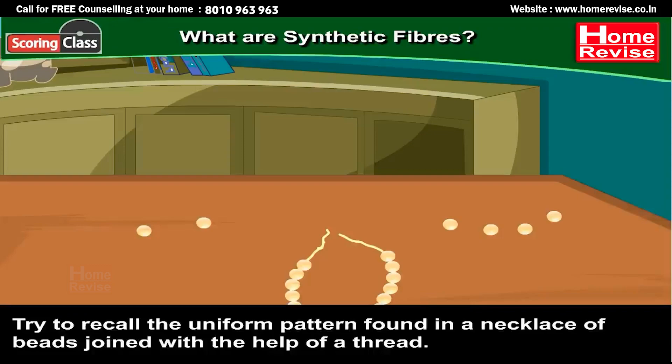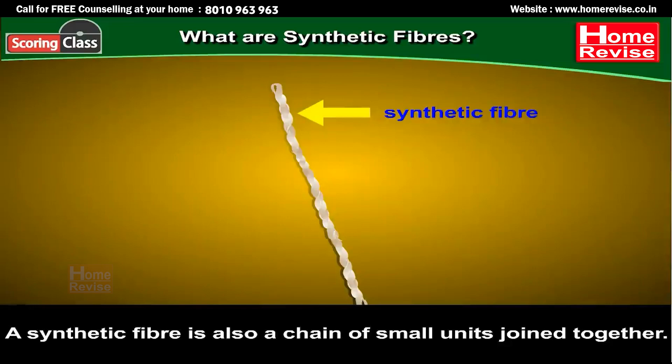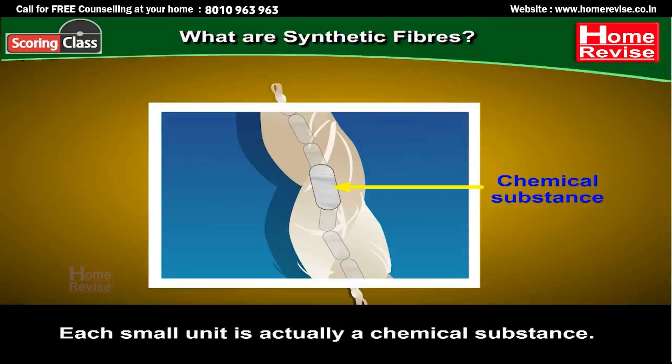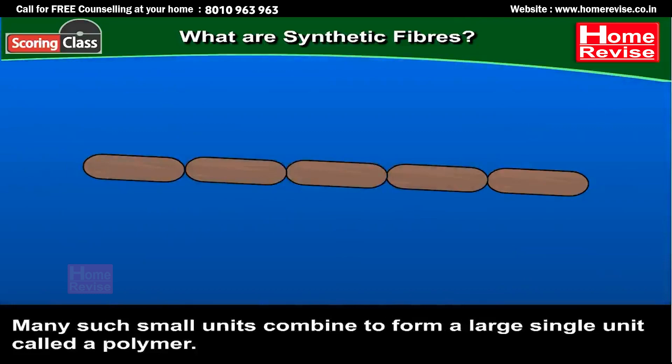What are synthetic fibres? Try to recall the uniform pattern found in a necklace of beads joined with the help of a thread. A synthetic fibre is also a chain of small units joined together. Each small unit is actually a chemical substance. Many such small units combine to form a large single unit called a polymer.